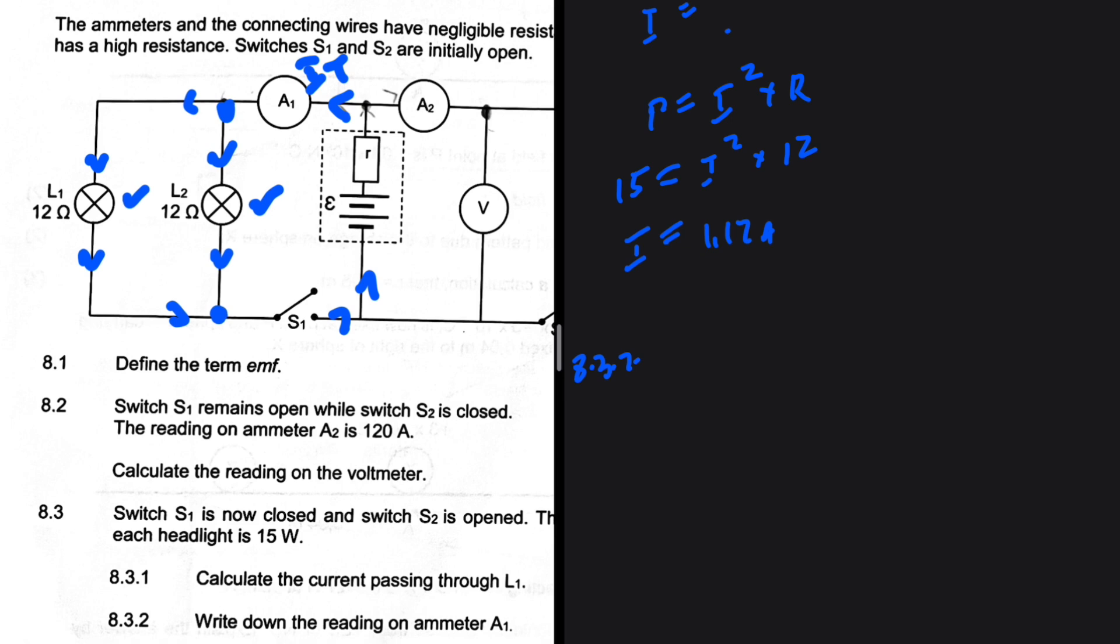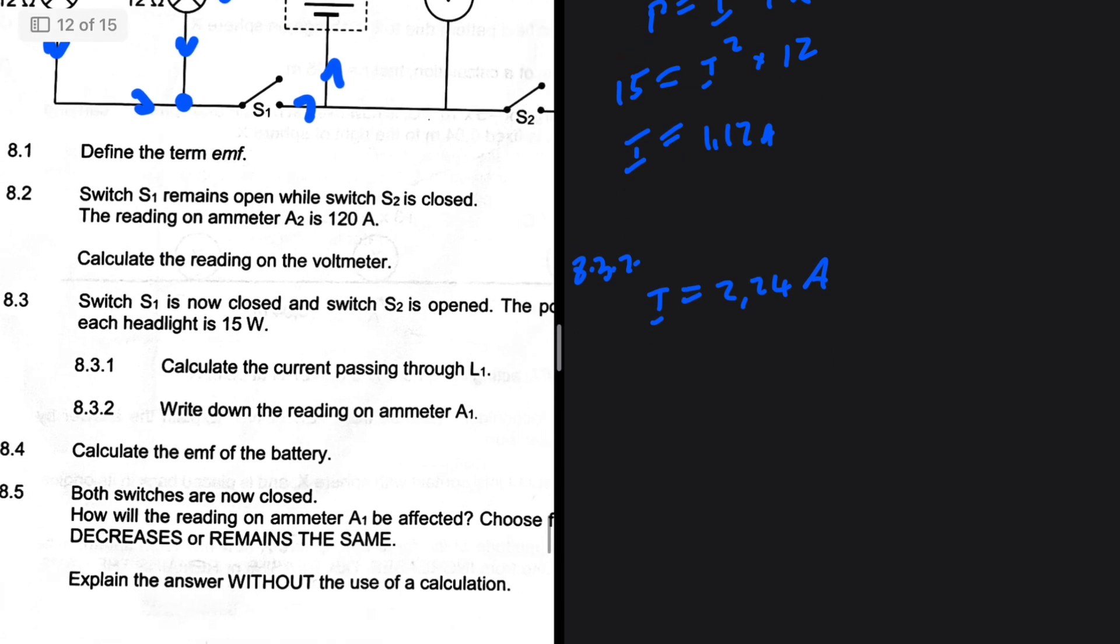Here the resistances are equal, so it is going to divide equally. But then if we had different resistances, more current would go to the path of least resistance and then less current will go to the path of more resistance, which makes sense. So 8.3.2: the reading on A1, which is the total current, will be 2.24 ampere. Just 1.12 multiplied by 2. So that is 8.3.2.